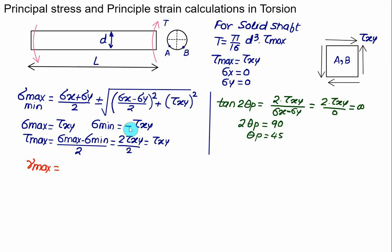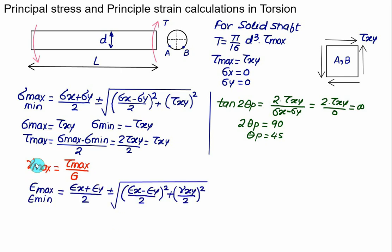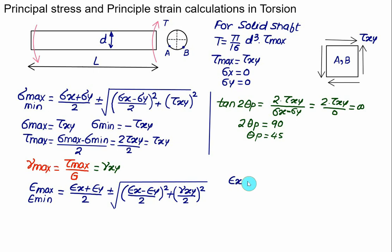γ_max = τ_max / G, which is the maximum shear strain, treated as γ_xy. We then calculate the two principal strains ε_max and ε_min using: ε = (ε_x + ε_y)/2 ± √[((ε_x − ε_y)/2)² + (γ_xy/2)²]. Since σ_x = 0 and σ_y = 0, there is no linear strain along x or y directions — no change in dimension along x and y, only twist.